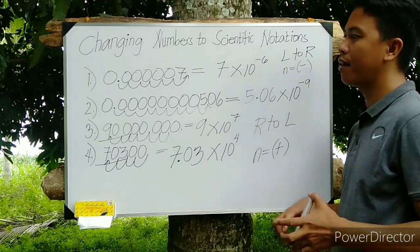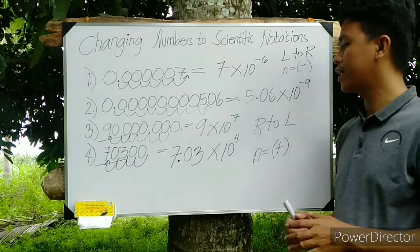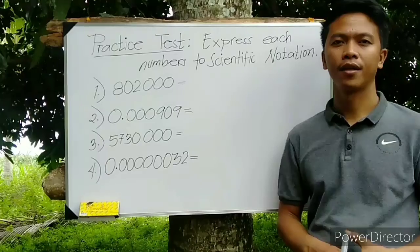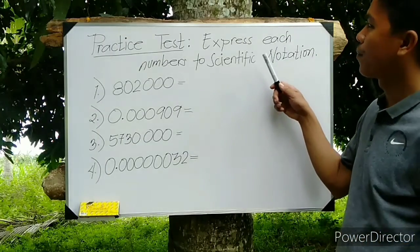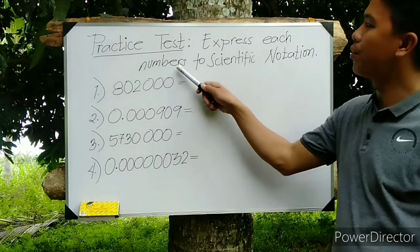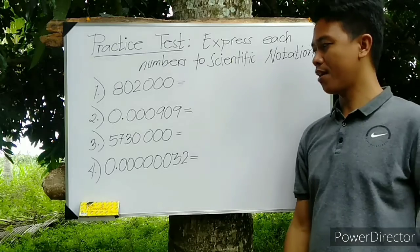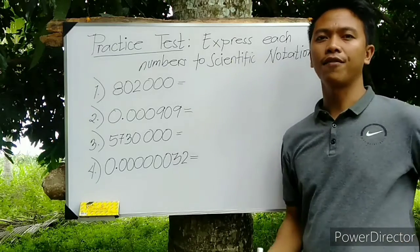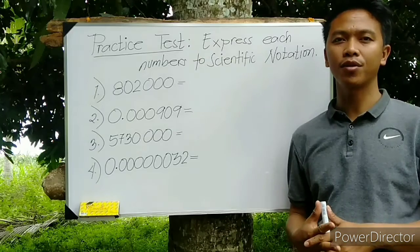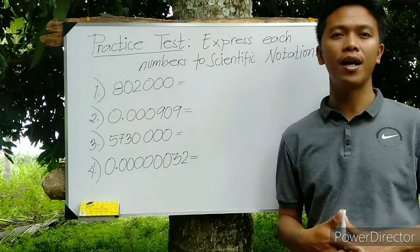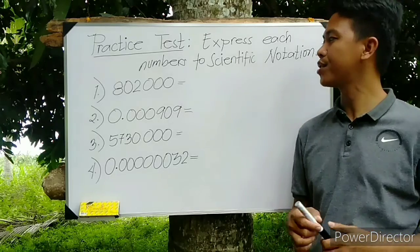So those are the techniques on how we're going to convert numbers to scientific notations. So this time, let's go now to our practice test. The instruction here is express each number to scientific notation. So I prepared here 4 problems on the board. If you have your ball pen or notebook right now, you can answer in your notebook. Pause the video for a while, and after you answered the problems, you can play the video again and check your answers.